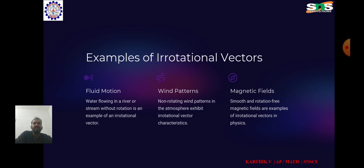Wind patterns: On large scales, the wind patterns in the Earth's atmosphere can often be modeled as irrotational. Magnetic fields: In electrostatics and magnetostatics, the magnetic field is produced by a static distribution of magnetic sources. In some materials such as superconductors at certain temperatures, the magnetic field can behave as if it is irrotational due to the expulsion of the magnetic flux.